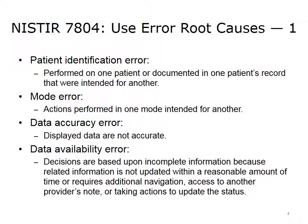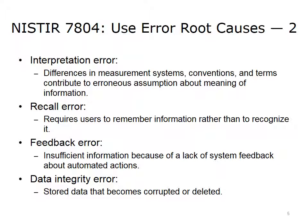The goal of the report was to help focus on identifying and mitigating usability issues of EHR systems. The Use Error Root Cause model created several error categories: Patient Identification Error, performed on one patient or documented in one patient's record that was intended for another; Mode Error, actions performed in one mode intended for another; Data Accuracy Error, displayed data are not accurate; and Data Availability Error, where decisions are based upon incomplete information because related information is not updated within a reasonable amount of time, requires additional navigation, access to another provider's note, or taking actions to update the status. Interpretation Error involves differences in measurement systems, conventions, and terms that contribute to erroneous assumptions about the meaning of information.